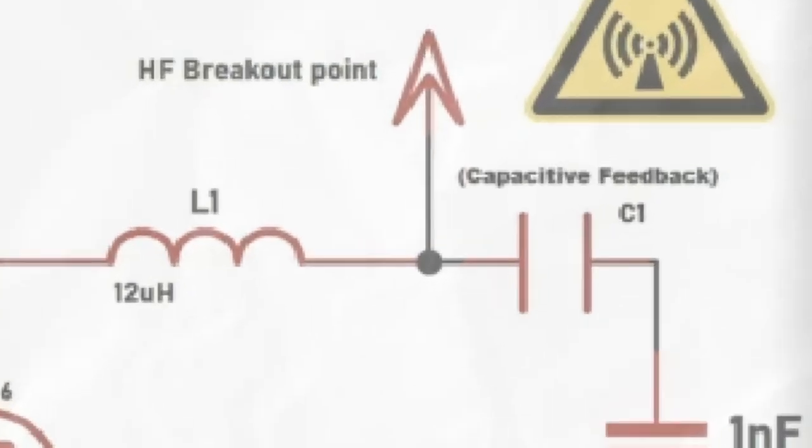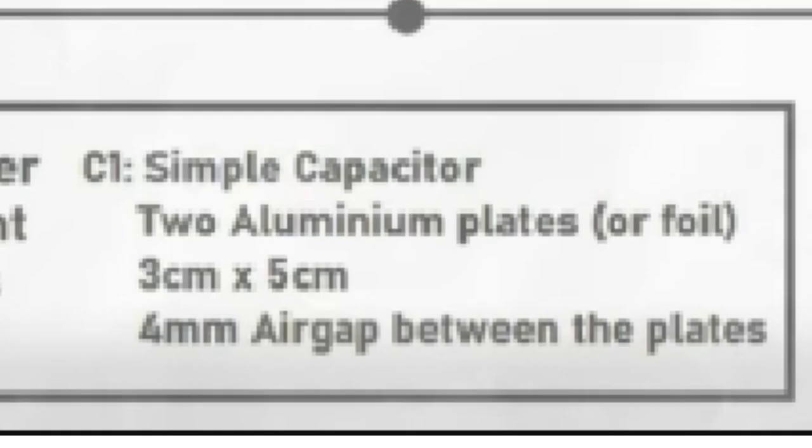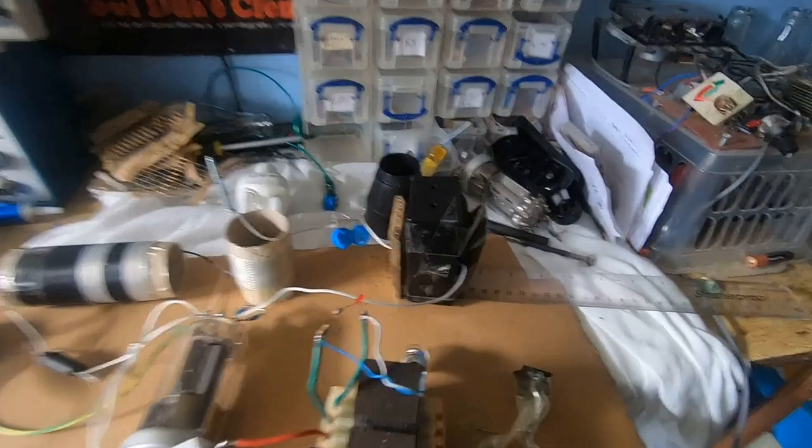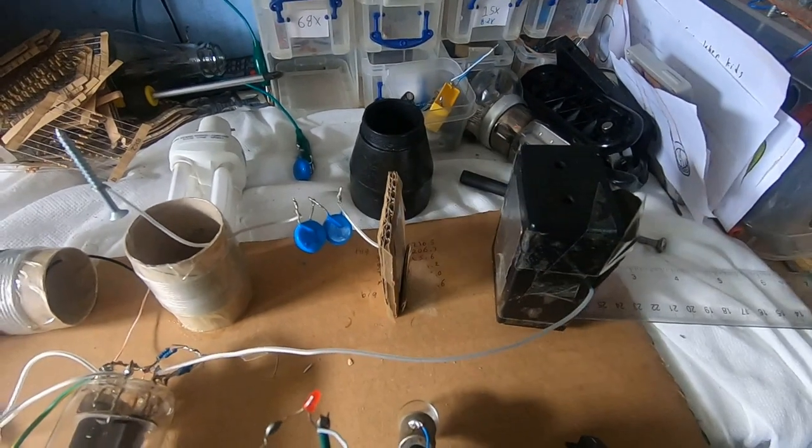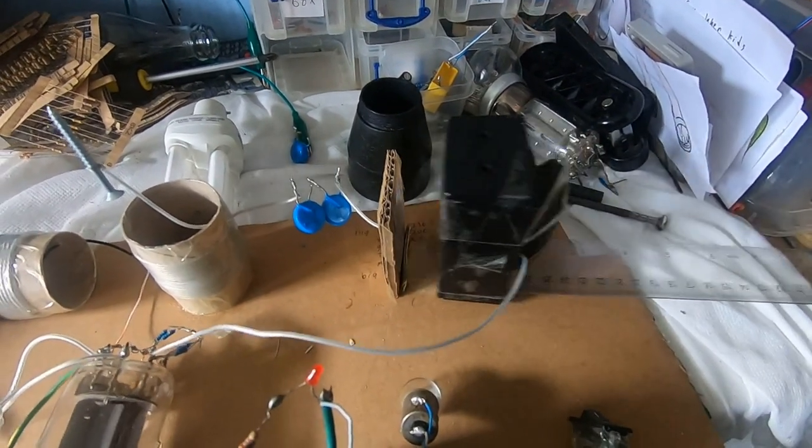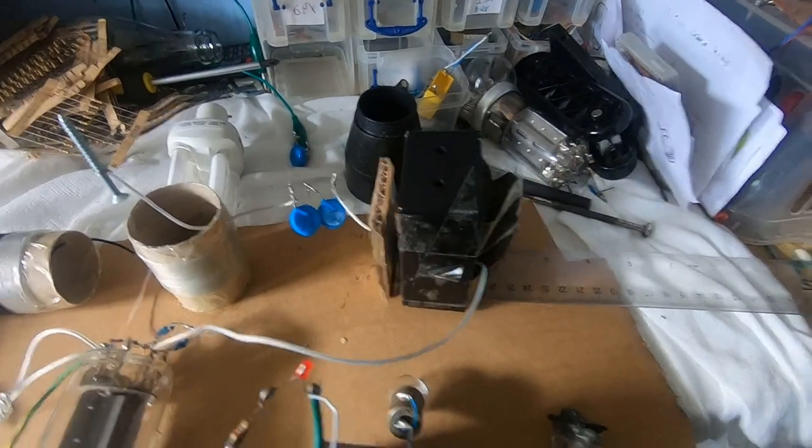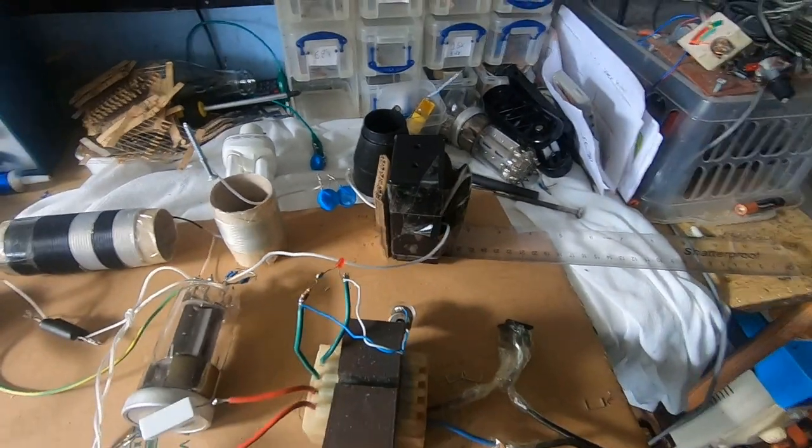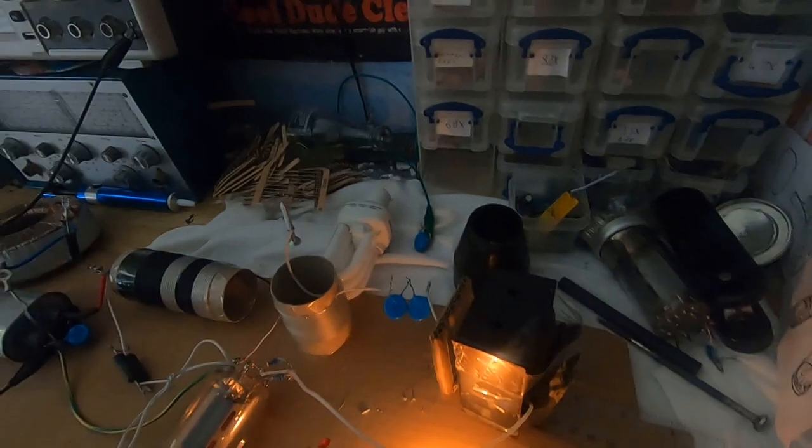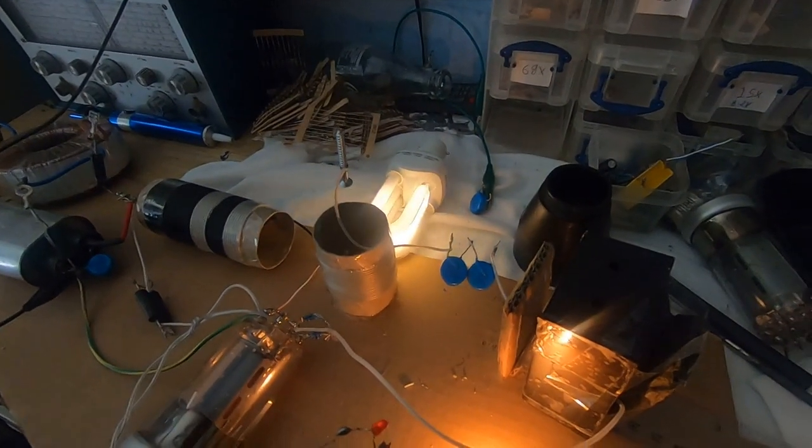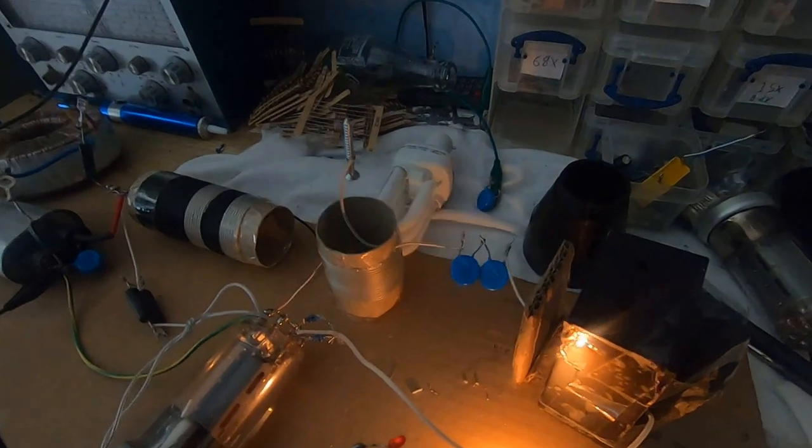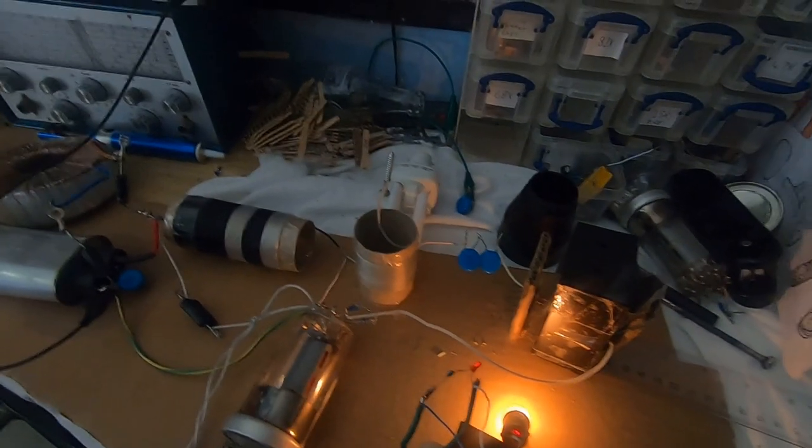And for the capacitor, I decided to go with something a little different from what the schematic suggested. So I built this capacitor with one fixed plate and one plate that I can move, so I can tune in the amount of feedback capacitance that would work best. And so far, all I've managed to do is get it to light up a compact fluorescent light bulb. Haven't got any plasma coming out of it whatsoever.